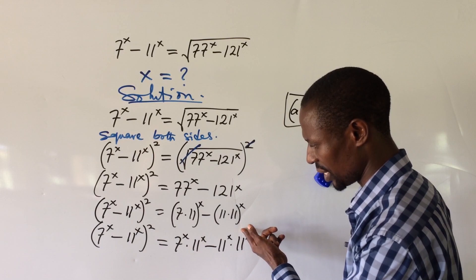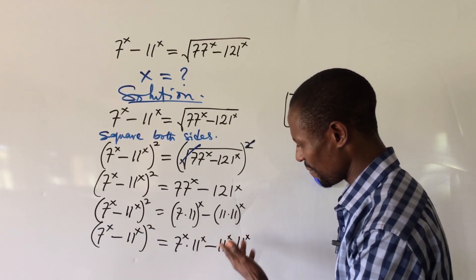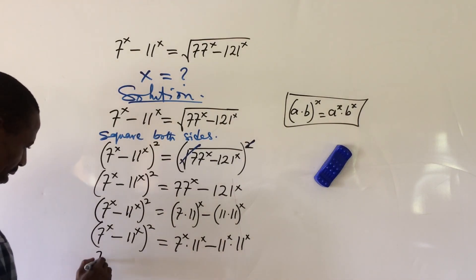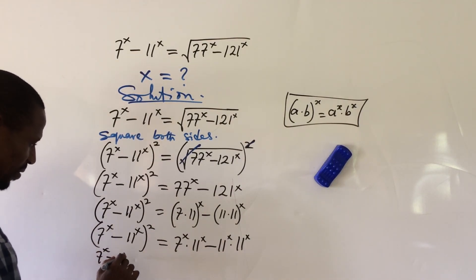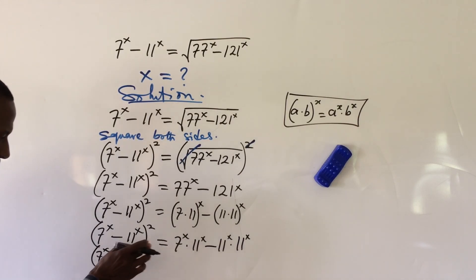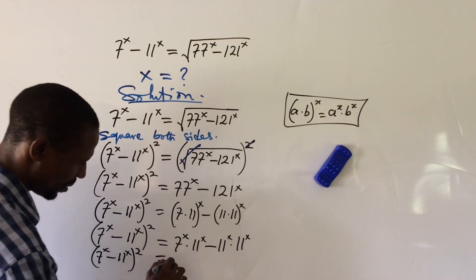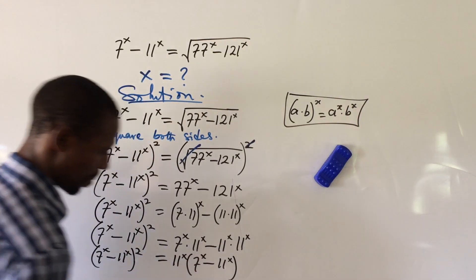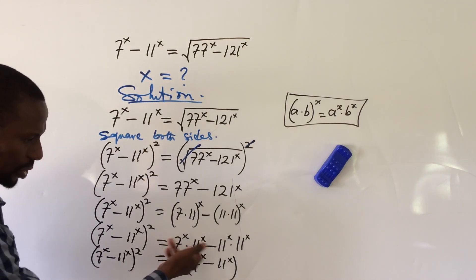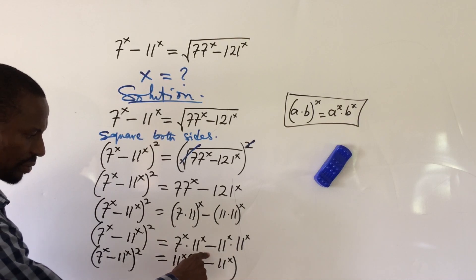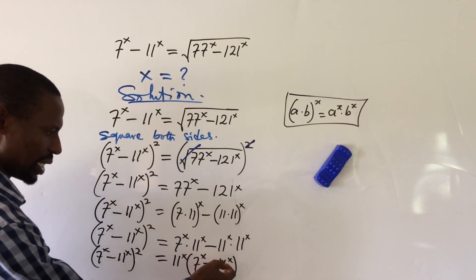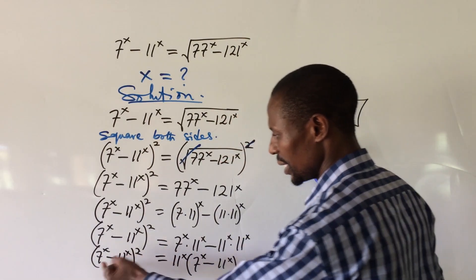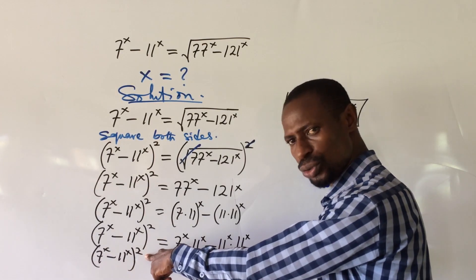Now we have 11 to the power of x appearing in both terms on the right-hand side. We factor out 11 to the power of x, giving us: 7 to the power of x minus 11 to the power of x, all to the power of 2, equals 11 to the power of x times the bracket 7 to the power of x minus 11 to the power of x.